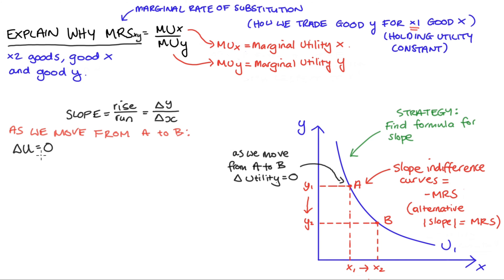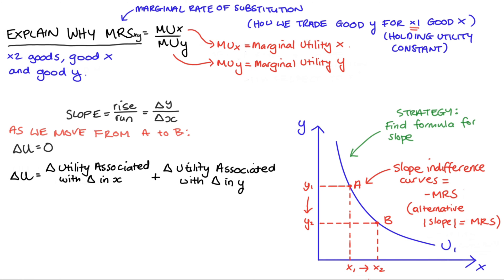So we can put some maths down. As we move between A and B, the change in utility, our change in u, is equal to zero. We can decompose this change in utility into two separate parts. As we move from A to B, we're decreasing our consumption of y — that will decrease utility — and we're increasing our consumption of x — that will increase utility. These two effects must exactly cancel each other out since the overall change in utility equals zero. So: the change in utility due to the change in x, plus the change in utility due to the change in y, equals zero.